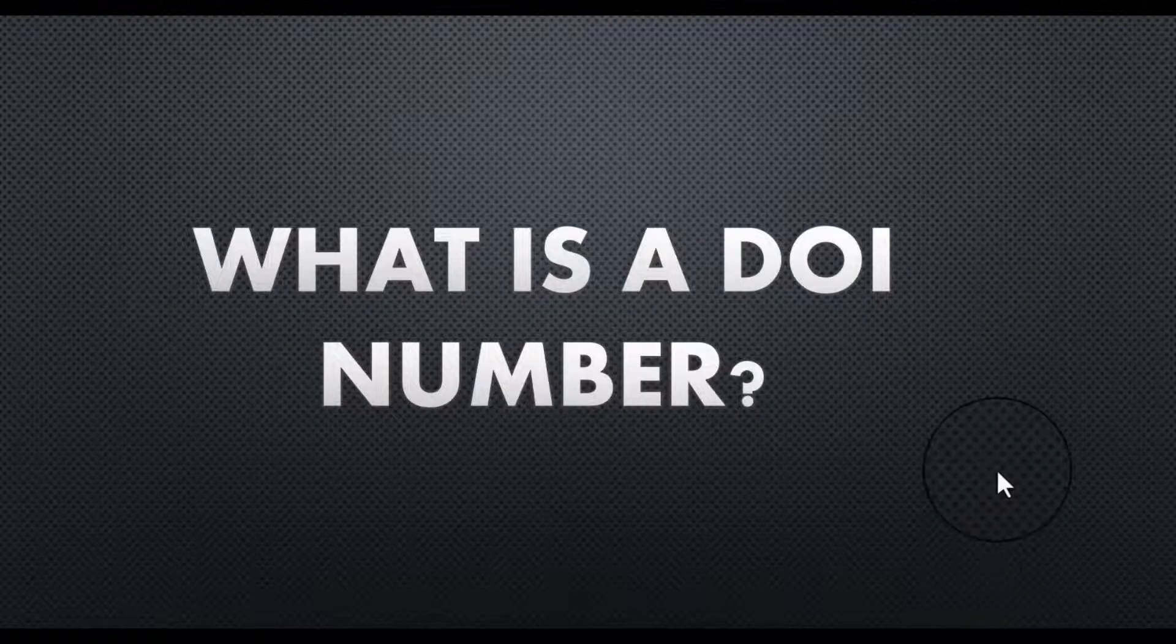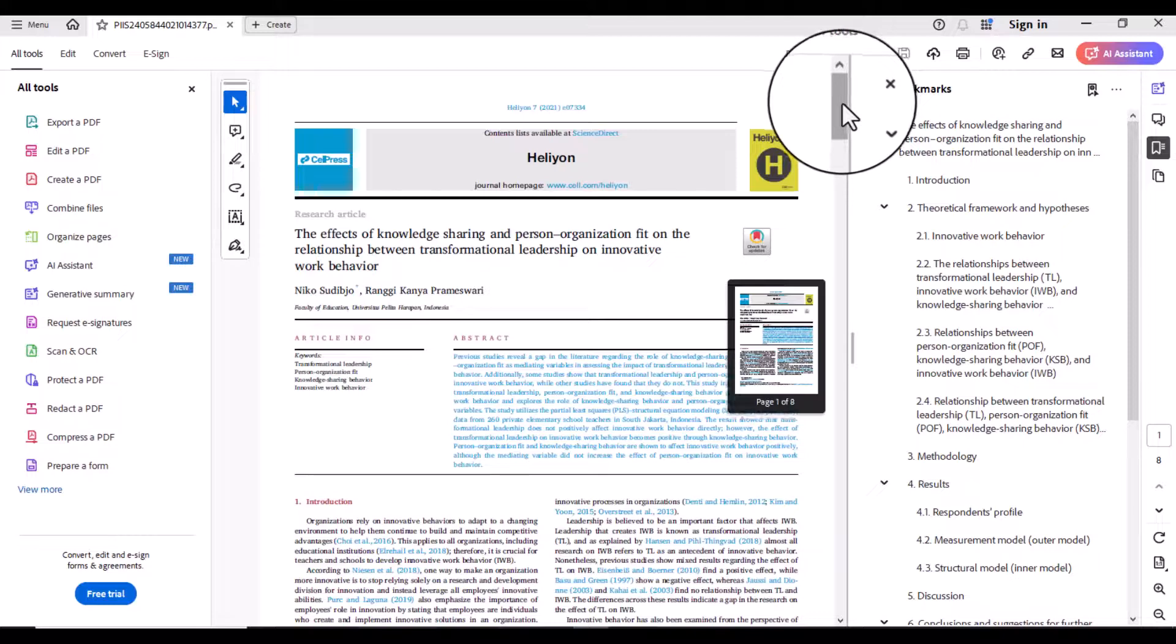If you want to find out DOI number for any particular document, you can use any of these five strategies. The first strategy could be to check the document itself. For instance, this is a research article.